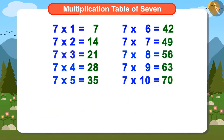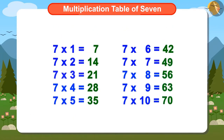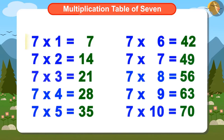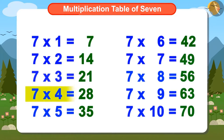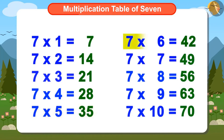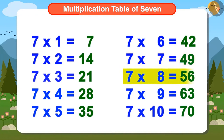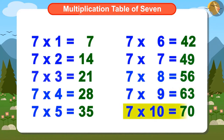Now you have written the complete table of 7. Let's memorize it by singing: 7 ones are 7, 7 twos are 14, 7 threes are 21, 7 fours are 28, 7 fives are 35, 7 sixes are 42, 7 sevens are 49, 7 eights are 56, 7 nines are 63, 7 tens are 70.